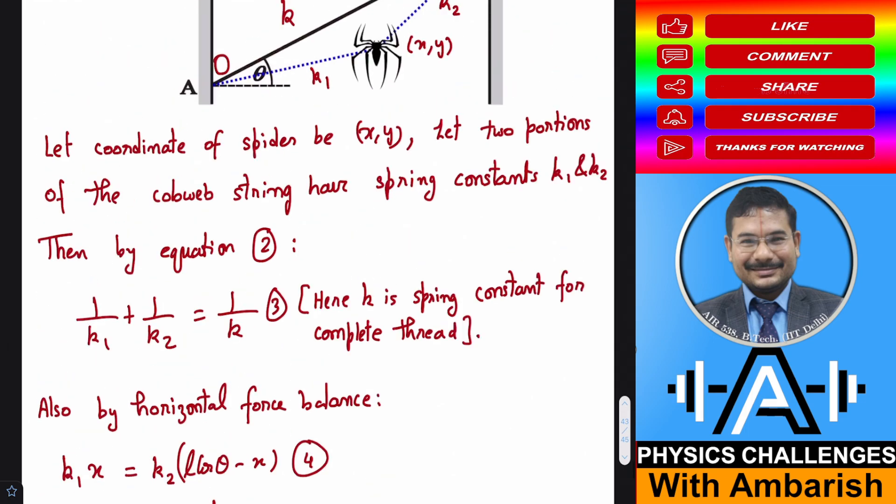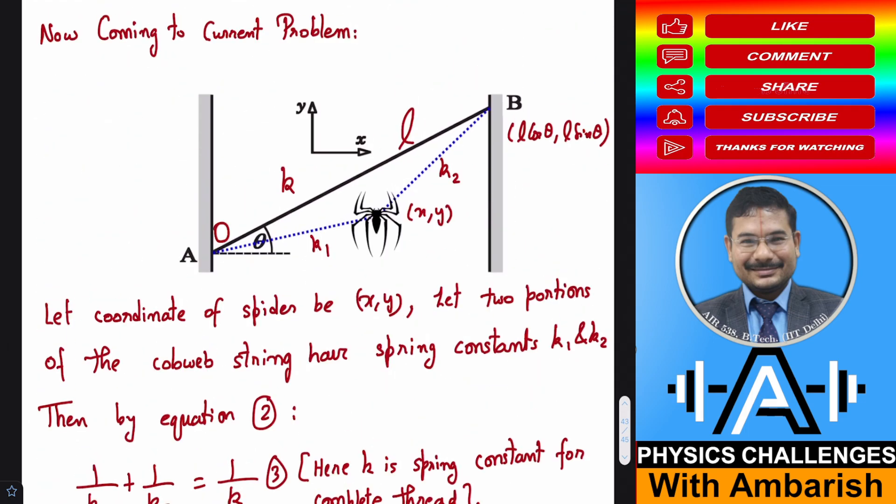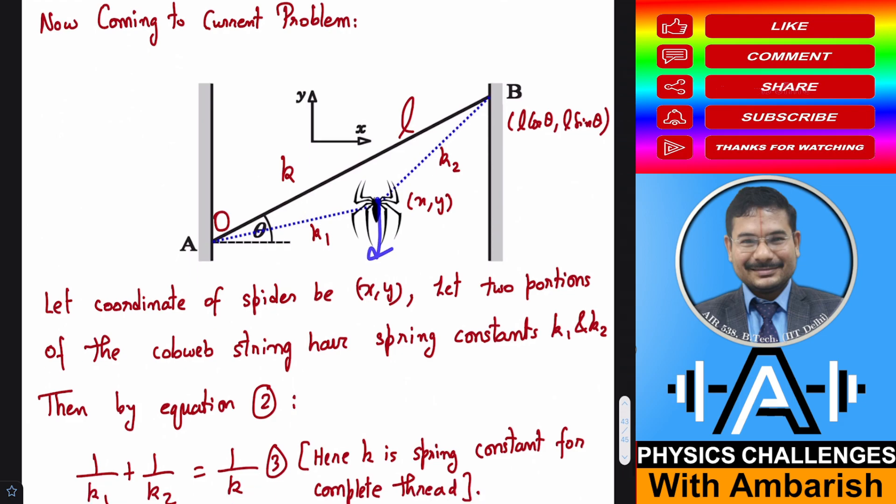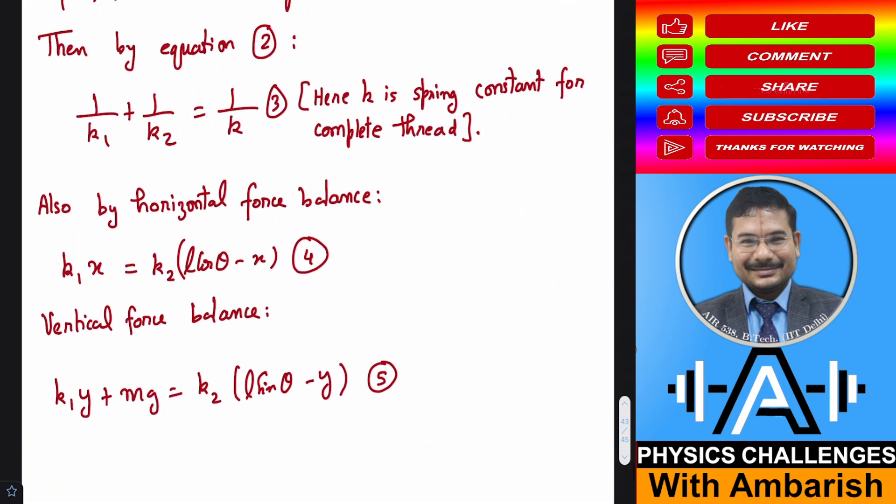Now we can also do vertical force balance. Here the downward force is K1 times Y stretching, and Y stretching is simply Y because we started from the origin. For this one, the upward force will be, the Y stretching is L sin theta minus Y. Upward force will be L sin theta minus Y times K2. And of course there is an MG acting downward. If you write the force balance equation, downward force K1Y plus MG should equal upward force, that is K2 times L sin theta minus Y. I hope you understood equation 5 also.